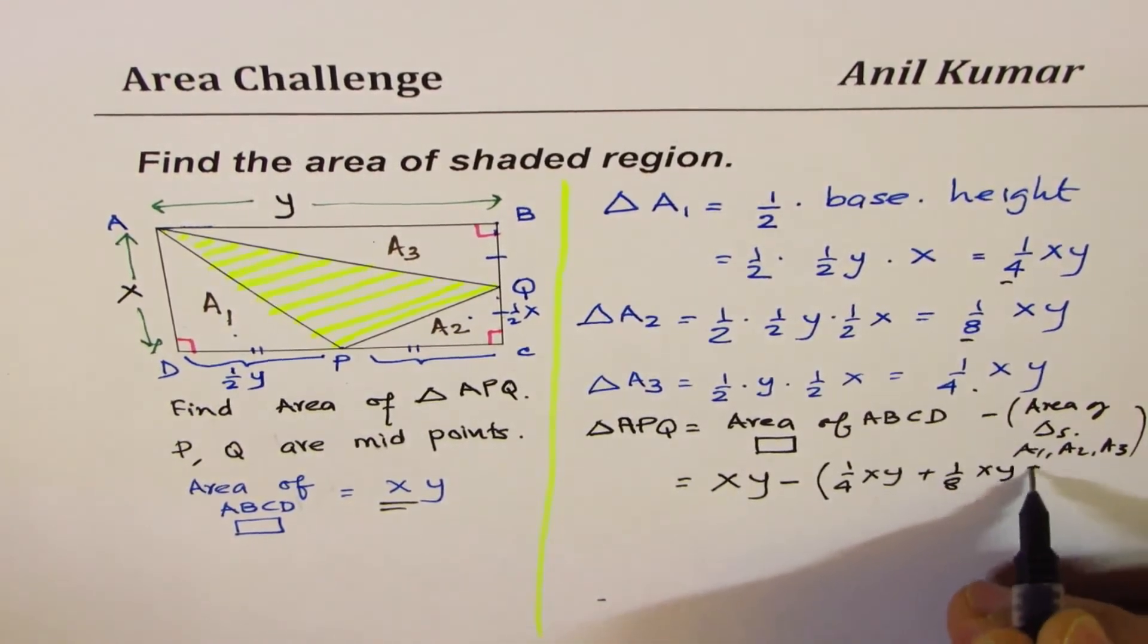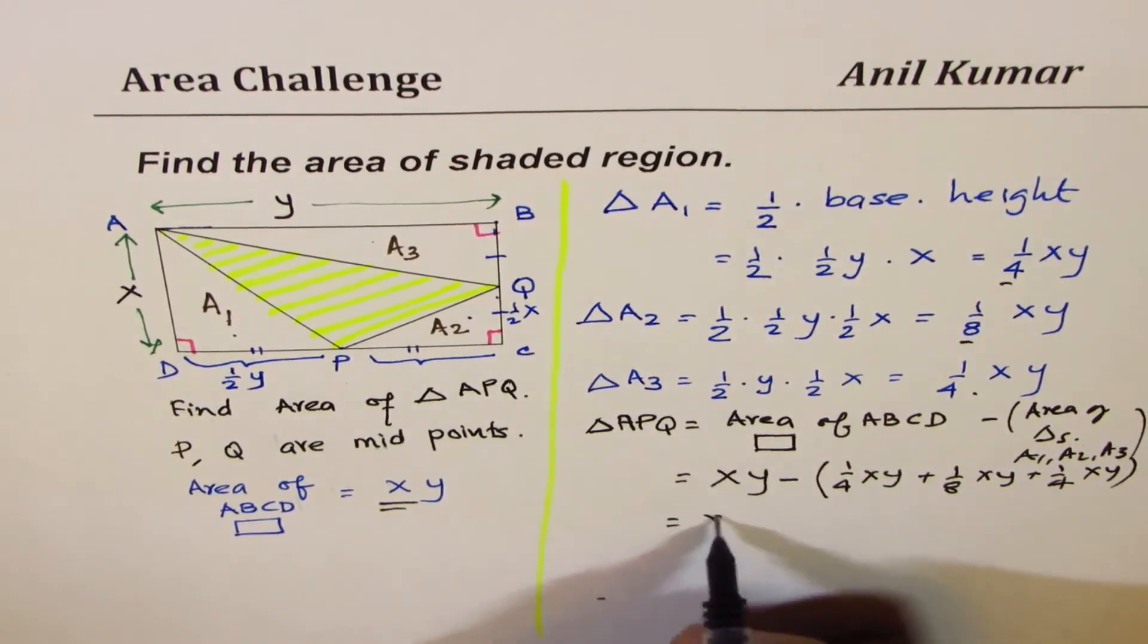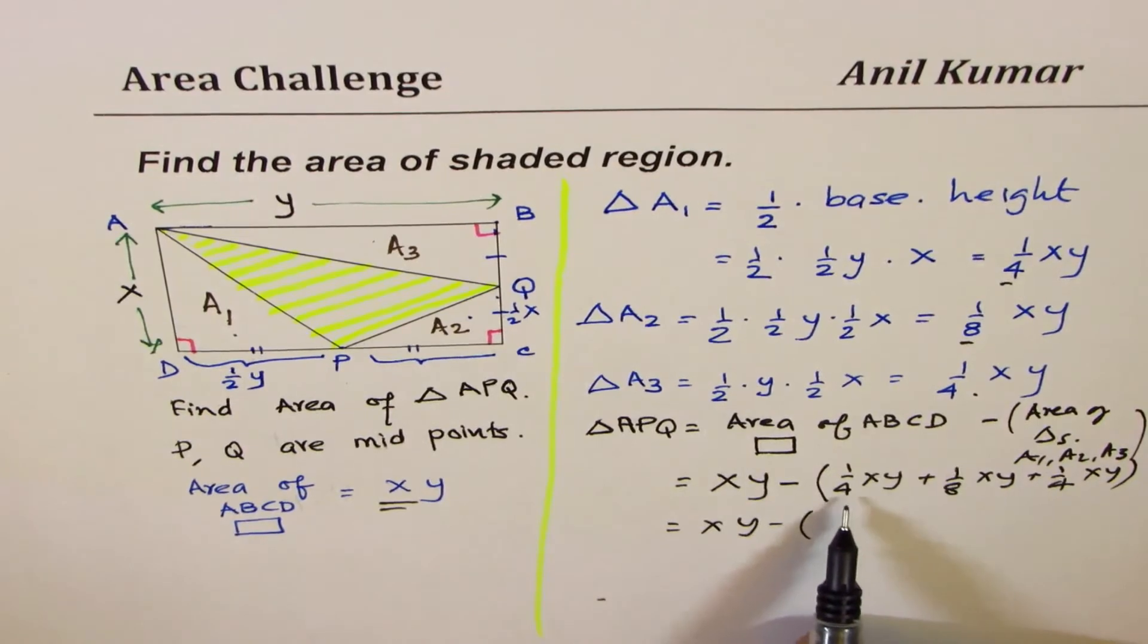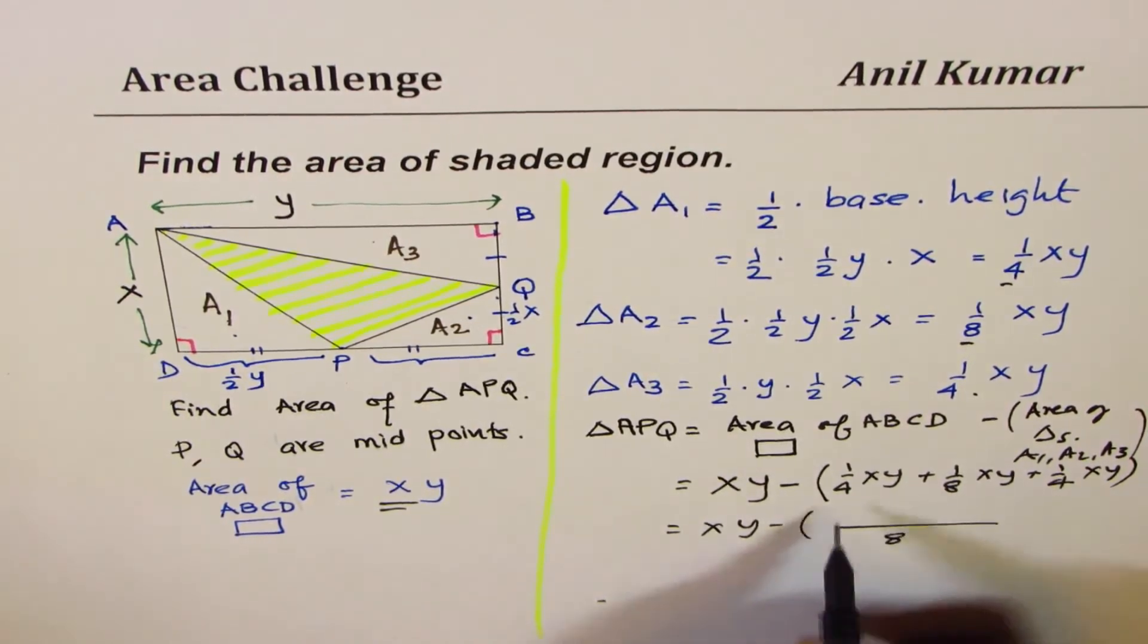So it means XY minus how much? So all this you can take 8 as your common denominator. 8 is your common denominator, let's say 8, then you get 2XY plus XY plus 2XY.